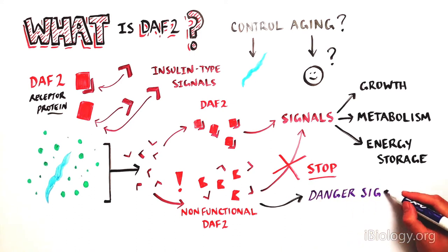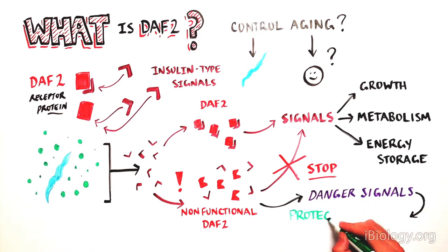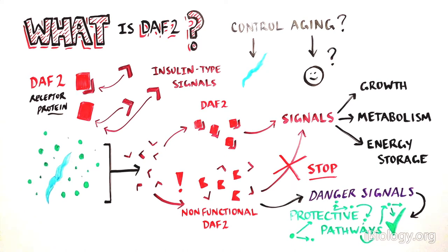In response to these perceived dangerous signals, the C. elegans turn on protective pathways to ensure their cells and DNA remain healthy, thereby delaying aging.